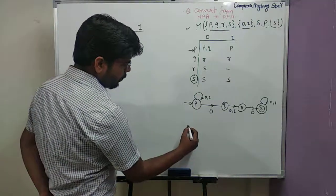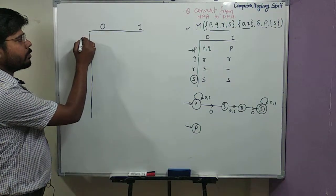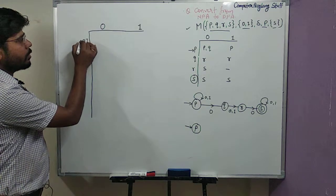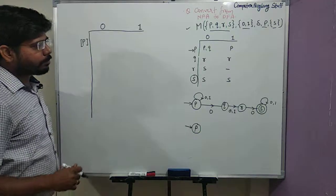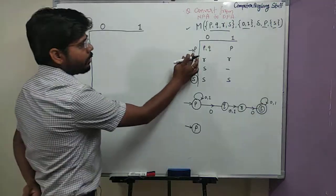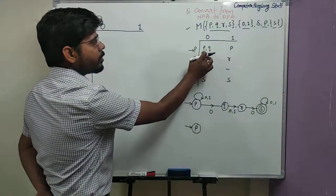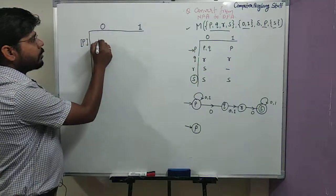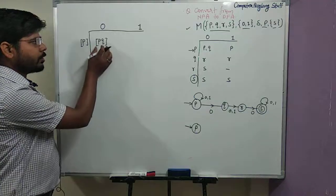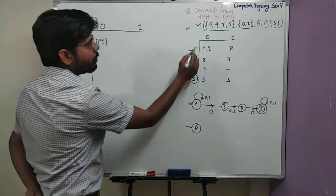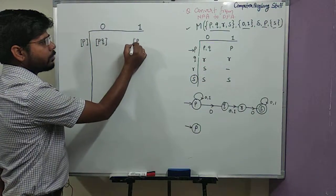Just as we draw the first initial state in the diagram case, here also we draw the first initial state, that is P. Now making the transition from state P: for input symbol 0, we have two states — P and Q. So P,Q together is our single new state, not two different states. For input symbol 1 from P, we have state P.